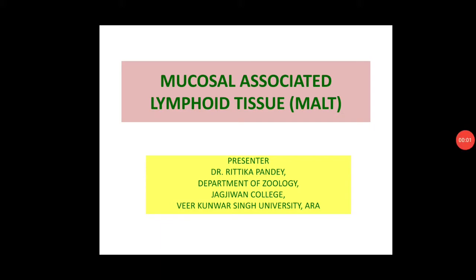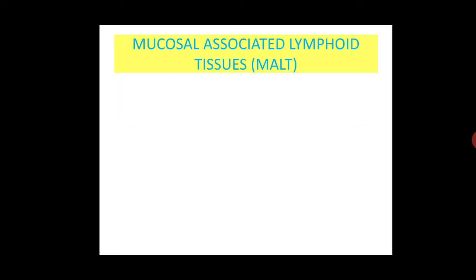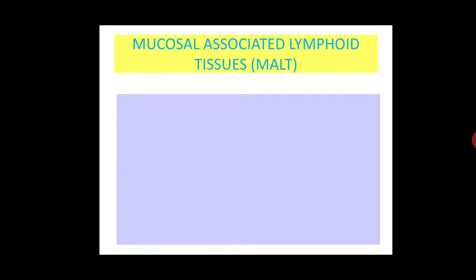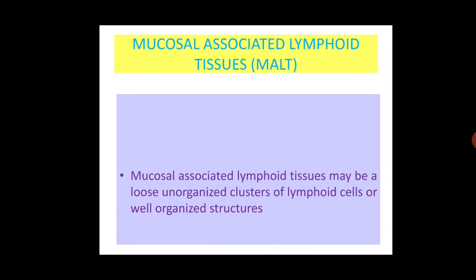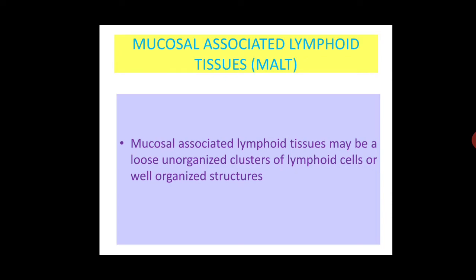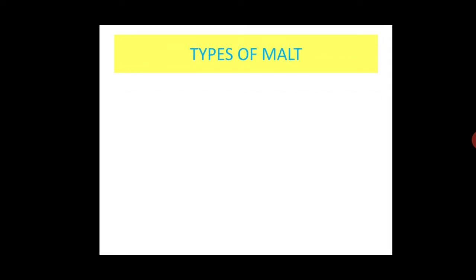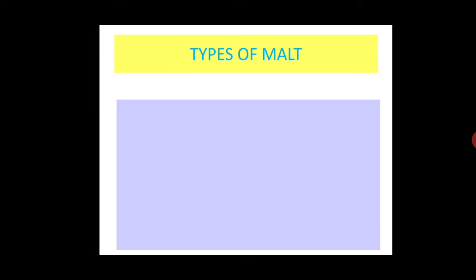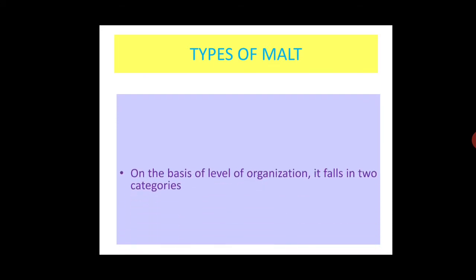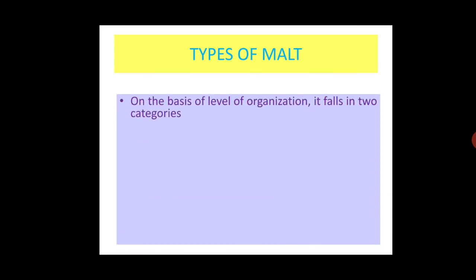Hello everyone, today's topic is mucosal associated lymphoid tissue. Mucosal associated lymphoid tissue may be loose, unorganized clusters of lymphoid cells or well-organized structures. There are two types of mucosal associated lymphoid tissues on the basis of level of organization.